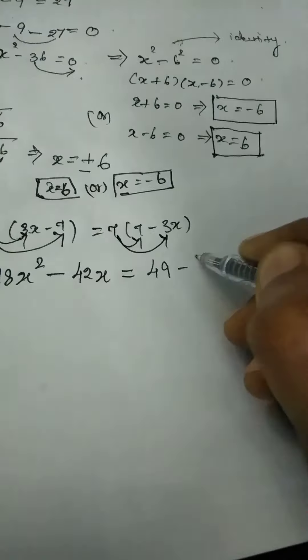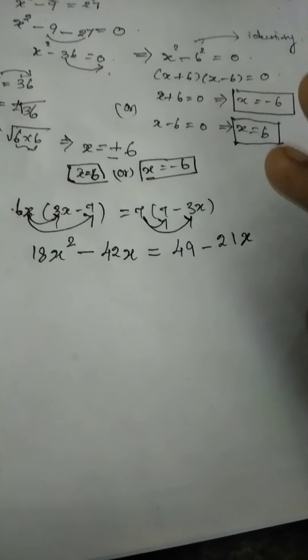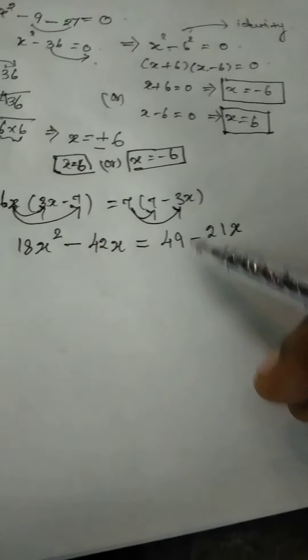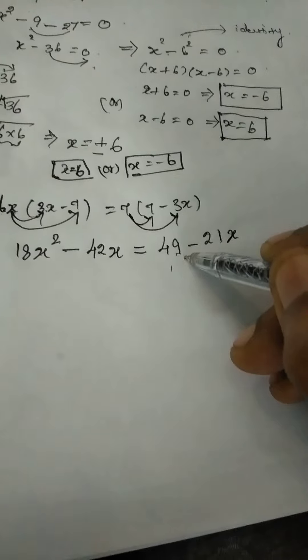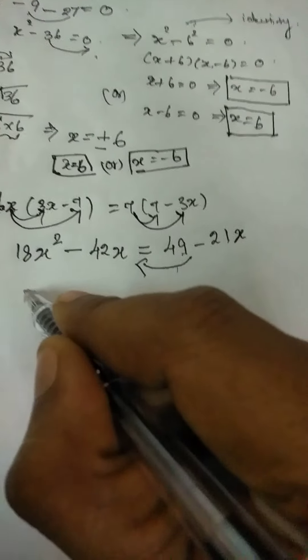So next we want to transpose everything one side because we want to make it as a quadratic equation. Quadratic equation in the sense we should have only 3 term, x square term, x term and the constant term.